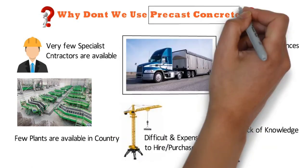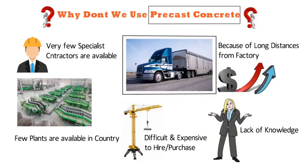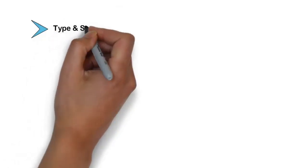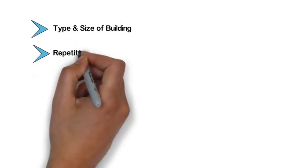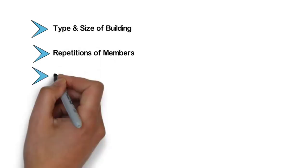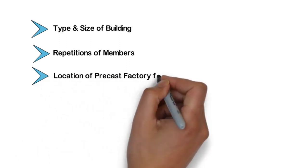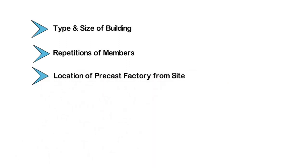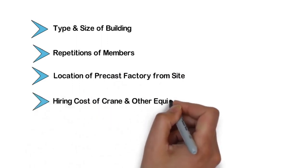Before going for the precast concrete method, you need to check the following points: the type and size of the building, as precast concrete method is generally used for bigger projects; check repetitions of members, as if the same type of floors are there, you can go for precast technology, otherwise it is not feasible; the location of the precast factory from site, as if it is far, transportation cost becomes huge; and the hiring cost of cranes and other equipment at site.